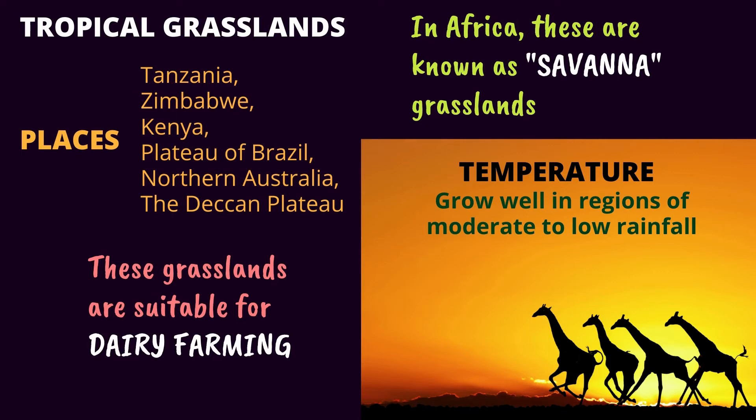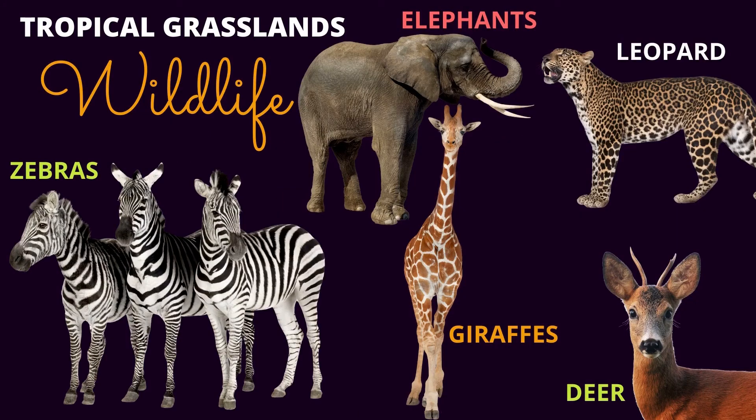These grasslands grow well in regions of moderate to low rainfall. What kind of animals can we find in the tropical grasslands? Zebras, giraffes, deers, elephants and leopards.